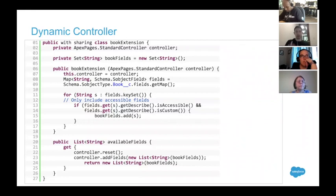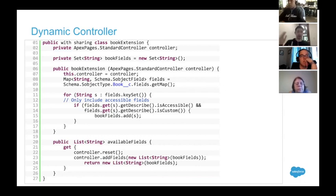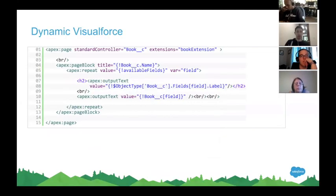For Visualforce — probably not used as much anymore — I have a custom object called Book that I can run a Schema.SObjectType command on and get all the fields in my Book object. I can then check to see if those fields are accessible by the current user and whether or not they're custom fields, to filter out created date, last modified date, and things like that, and add them to a list. Once I get those available fields, I can return them to a Visualforce page where I'm getting all those field values and can display the labels and field values accordingly.